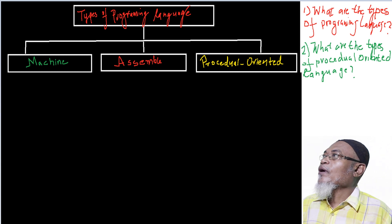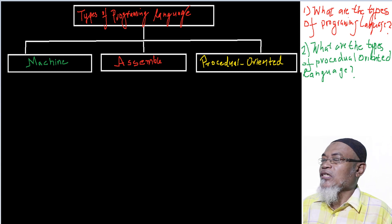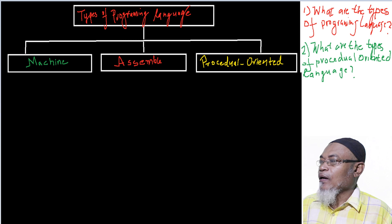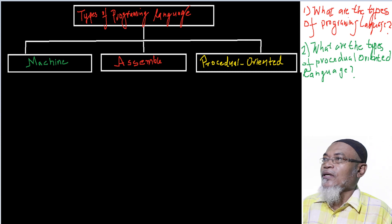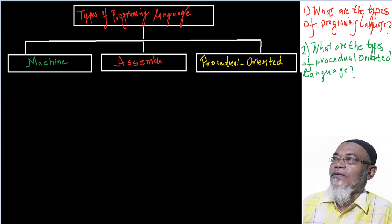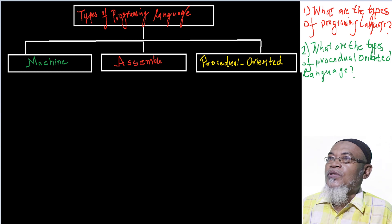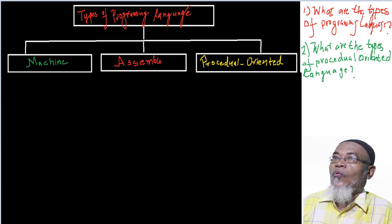In our last video we talked about what a programming language is. In summary, a programming language is a means of writing a programming algorithm that can be understood by both humans and a machine. Today we are going to ask ourselves two questions: what are the types of programming language, and what are the types of procedural oriented programming language?